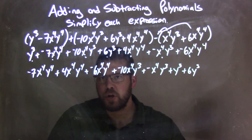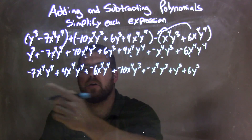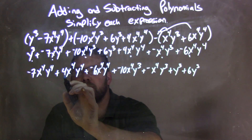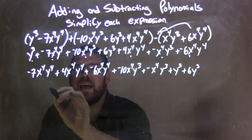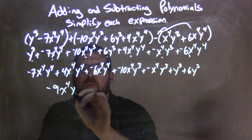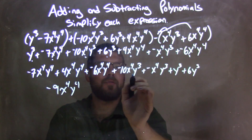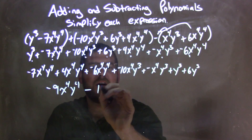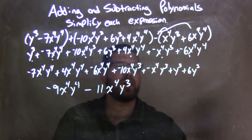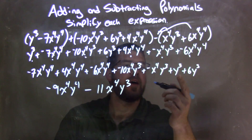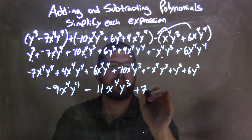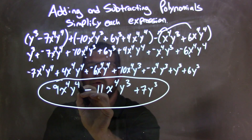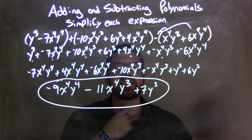Now we need to combine our like terms. These three all share the same x to the fourth y to the fourth: negative seven plus four is negative three, negative three plus negative six is negative nine. So these come together to be negative nine x to the fourth y to the fourth. Then negative ten x to the fourth y to the third and negative x to the fourth y to the third combine to be negative eleven x to the fourth y to the third. And lastly, y to the third plus 6y to the third is 7y to the third. Our final answer is negative nine x to the fourth y to the fourth, minus eleven x to the fourth y to the third, plus seven y to the third.